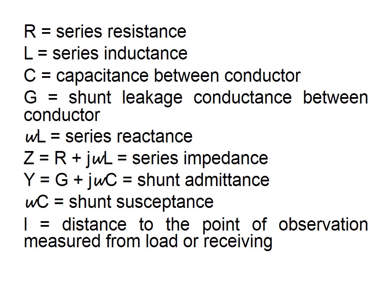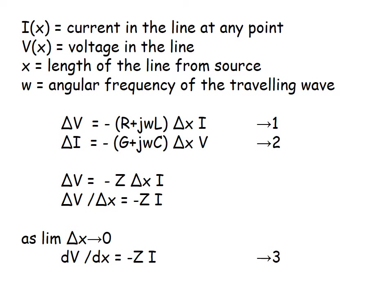ωL gives the series reactance, and the impedance Z is the combination of R and ωL. The shunt admittance is the combination of G and ωC, which is the shunt susceptance. L is the distance to the point of observation measured from the load. I(x) is the current at any point from the source end, V(x) is the voltage at any point from the source end, and ω is the angular frequency of the traveling voltage and current wave.